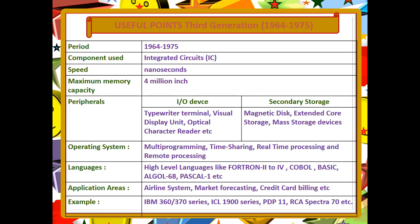The languages used in this generation are high-level languages. Examples of third generation computers include the IBM 360-370 series, ICL-1900 series, ADP-11, and RCA-Spectra 70, etc.